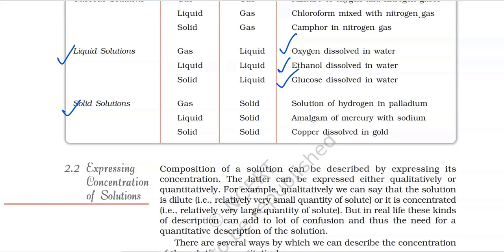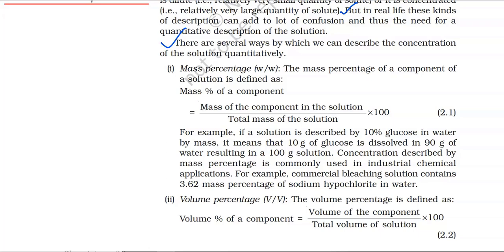2.2 Expressing Concentration of Solutions. The composition of a solution can be described by expressing its concentration. This can be expressed either qualitatively or quantitatively. For example, qualitatively we can say that the solution is dilute, meaning a relatively very small quantity of solute, or it is concentrated, meaning a relatively very large quantity of solute. But in real life, these kinds of descriptions can add to a lot of confusion, and thus the need for a quantitative description of the solution arises.